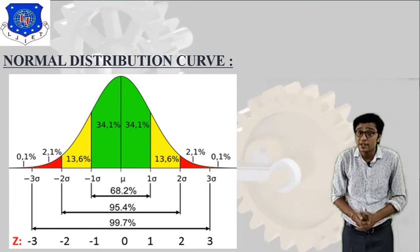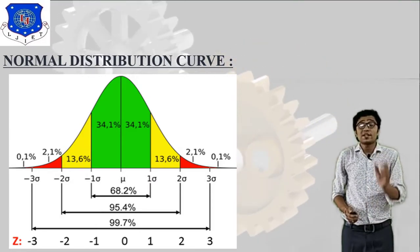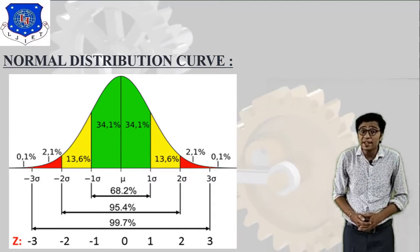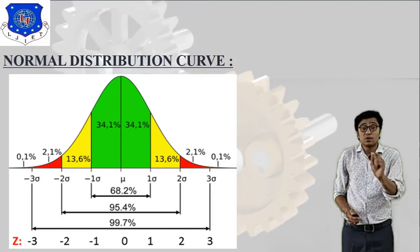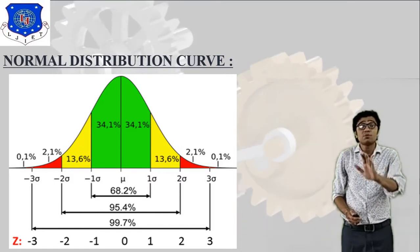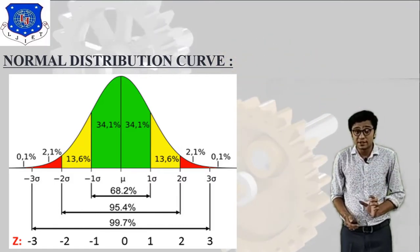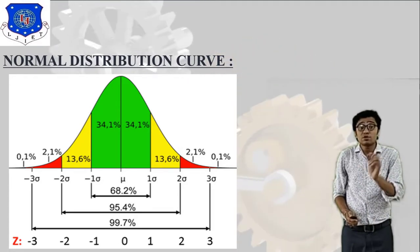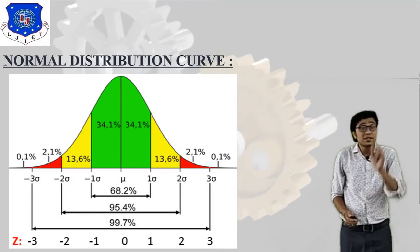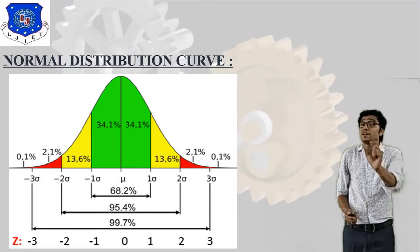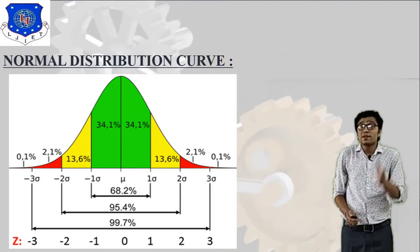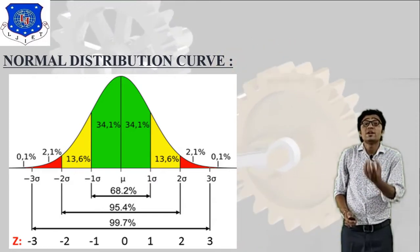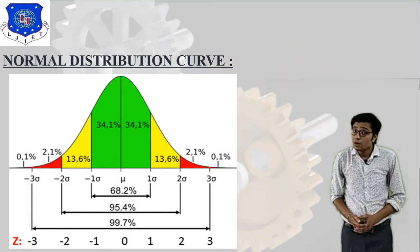Now the question is: what is the percentage-wise distance between minus one sigma to mu? As you can see in the image, that is 34.1%. Similarly, the distance from mu to plus one sigma is also 34.1%. So the overall distance between minus one sigma and plus one sigma is 68.2%, because it is a symmetrical curve.